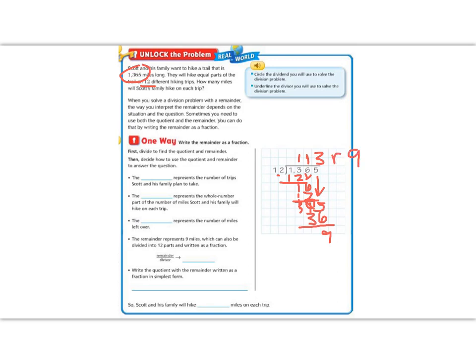Now let's use our notes to figure out how to answer this question. It says, the blank represents the number of trips that Scott and his family plan to take. Well, if we look back at our problem, it says that they are going to hike equal parts of the trip on 12 different days. So that means that our divisor tells us how many trips that we want to take. The blank represents the whole number part of the miles that Scott and his family will hike on each trip. So a whole number part tells me that I don't want any leftovers or remainders. So that means we want the word quotient. We want just the answer part of his division.